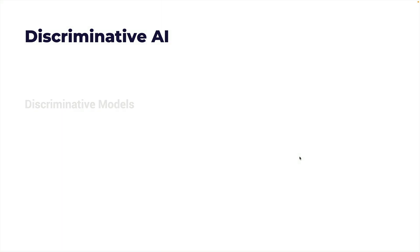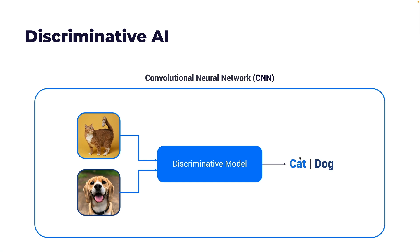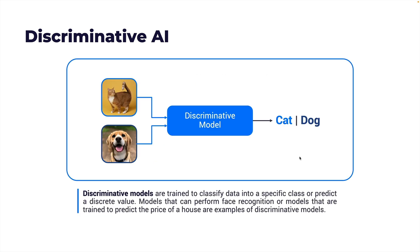Discriminative models learn to distinguish between different classes or labels of data — they map input data to a specific output and capture the boundaries between various classes. Instead of modeling how each class of data is generated, they focus on modeling the decision boundary between classes. Consider a dataset of images containing cats and dogs: a discriminative model like a convolutional neural network is trained to label an input image as either a cat or a dog. Discriminative models are trained to classify data into specific classes or predict discrete values, such as face recognition or predicting house prices.